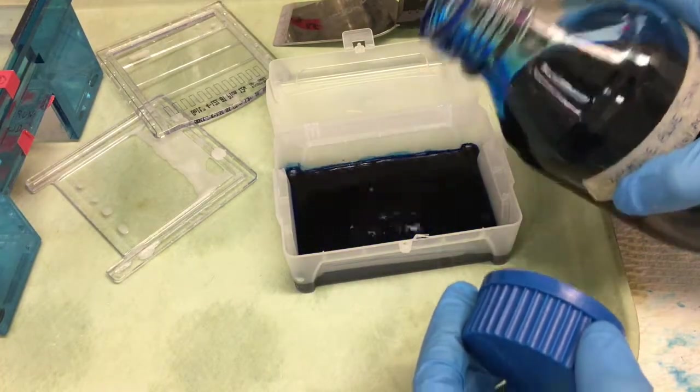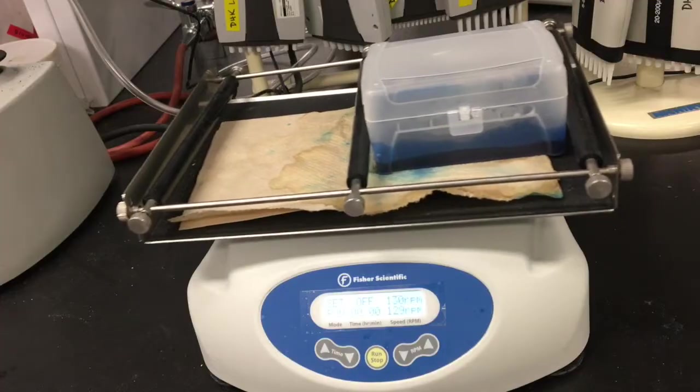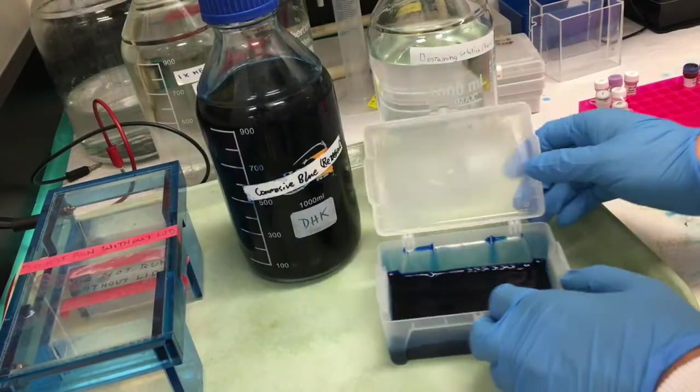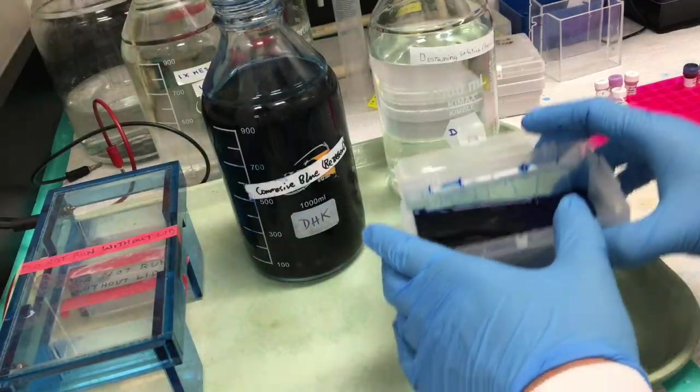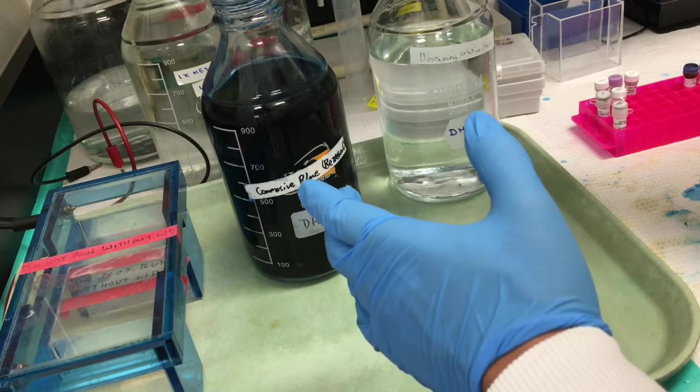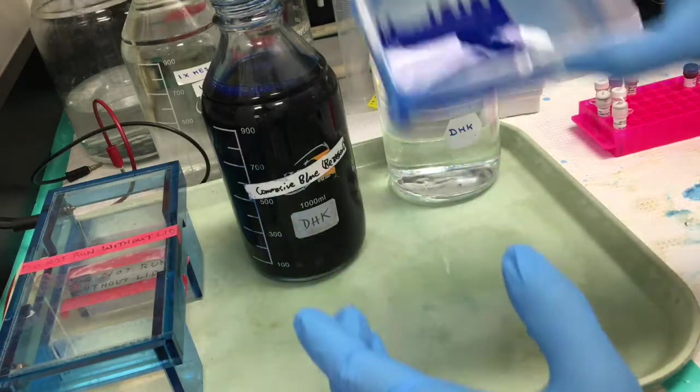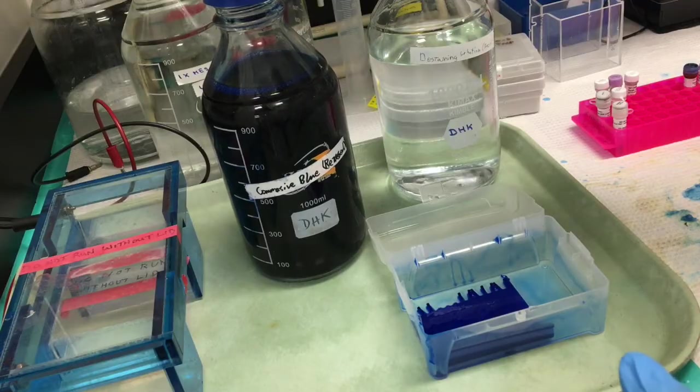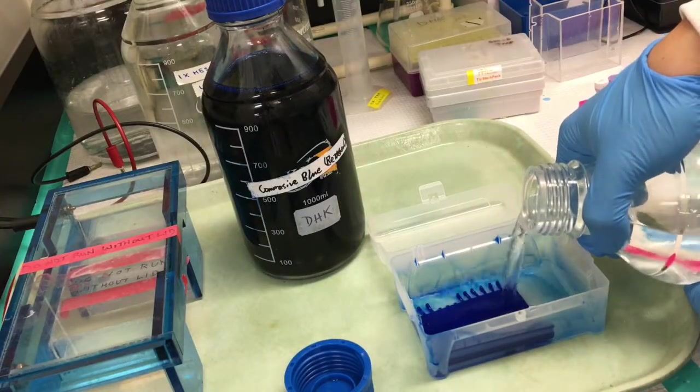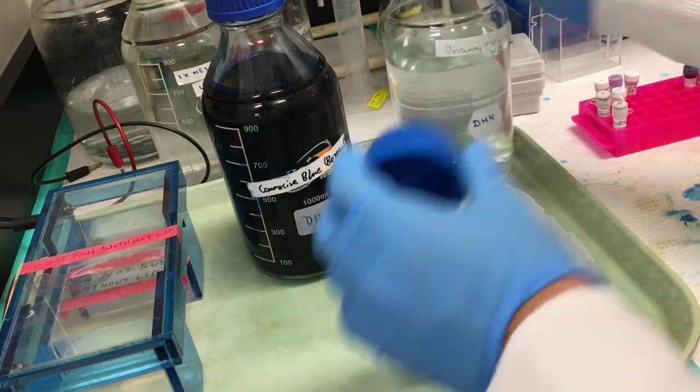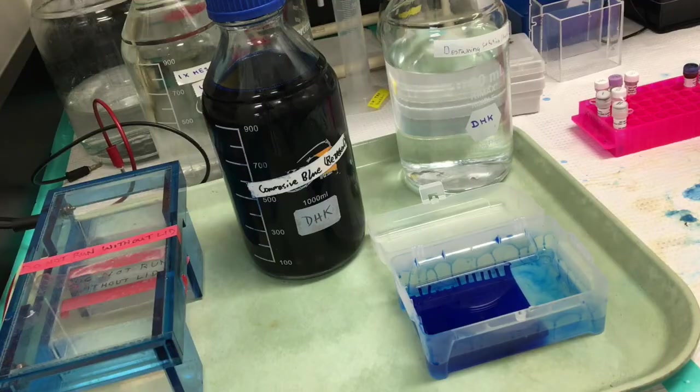Stain the gel with Coomassie solution for half an hour to an hour. You can save the old Coomassie solution for reuse. Then, destain the gel for a few hours. You can speed up the destaining process with a cotton ball to absorb the Coomassie stain.